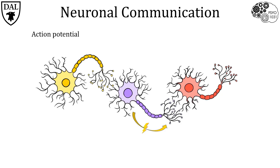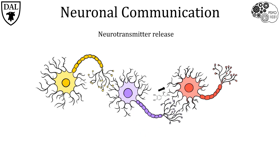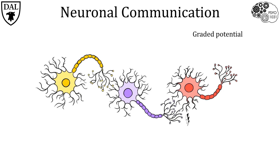As we saw before, the action potential propagates down the axon of the second neuron until it reaches the axon terminals, again initiating neurotransmitter release. These neurotransmitters are released into the synapse between the second and third neuron, which again initiates graded potentials — this time in the third neuron. This process then repeats onto four, five, six, and millions of other neurons.